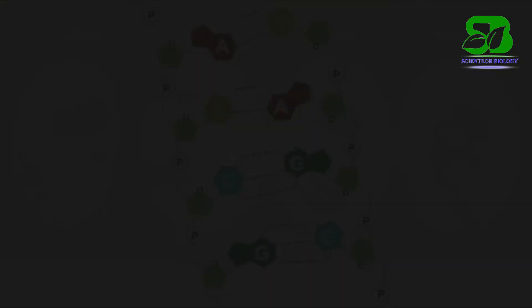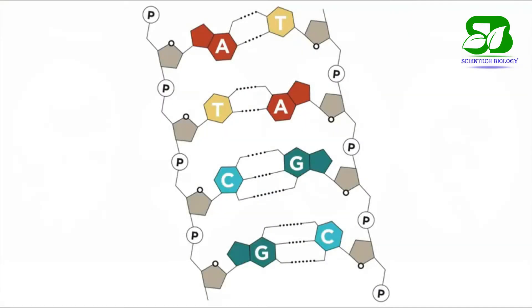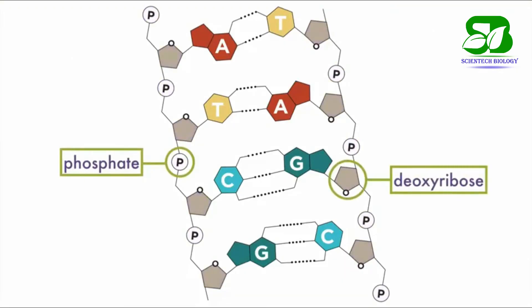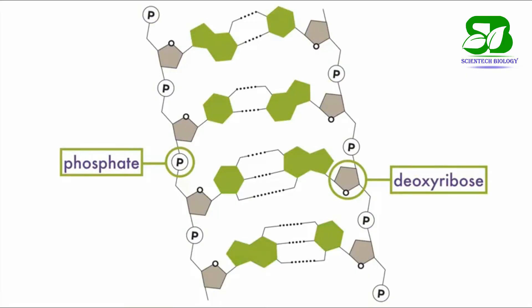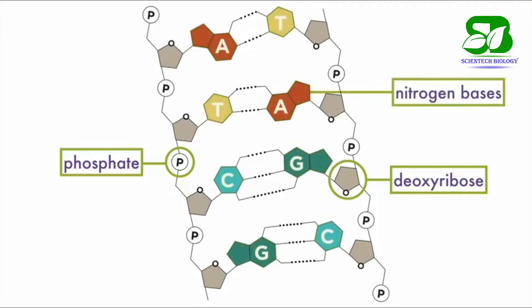The nucleotide and polynucleotide strands are stacked one above the other such that the sugar-phosphate backbone remains on the outer side and the nitrogen bases are directed towards the inner side.